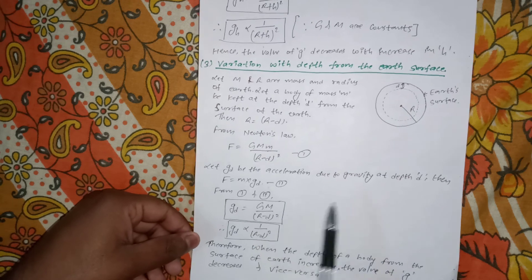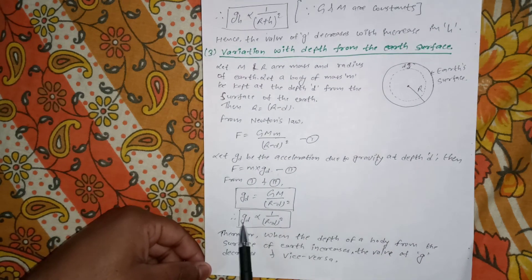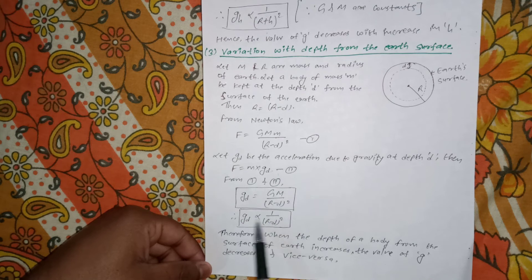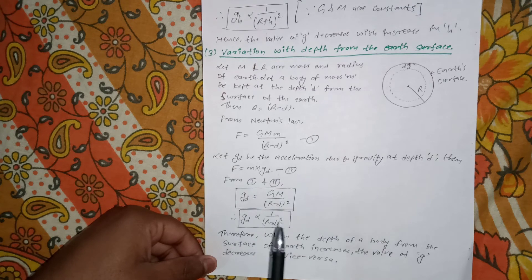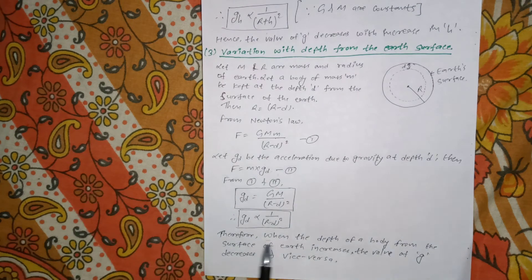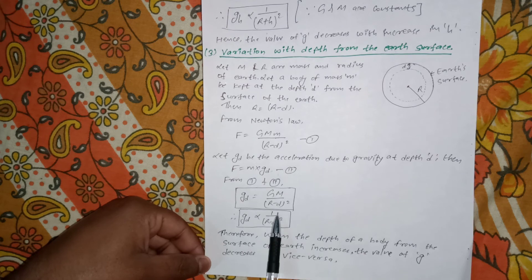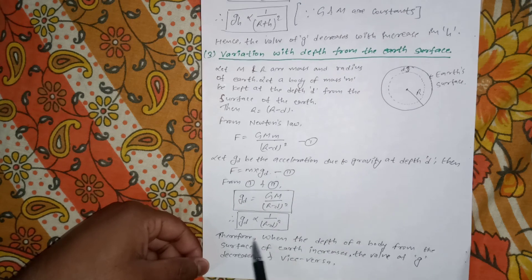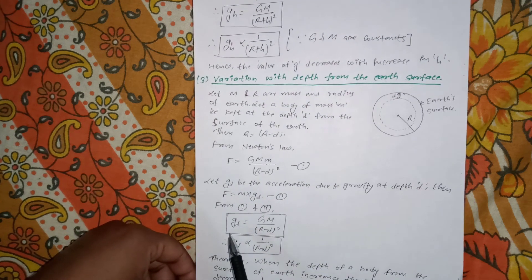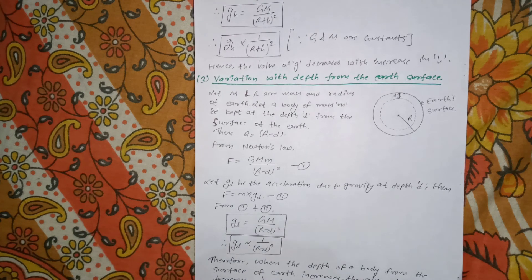Since G and M are constants, g_d ∝ 1/(R − d)². Therefore, if we decrease the value of d, the value of g will increase, and if we increase the value of d, the value of g will decrease. This is an important topic for the SE examination. I hope you guys understood it. If you like this video, please subscribe to the channel and don't forget to like. Thank you.